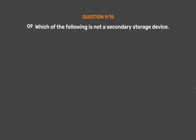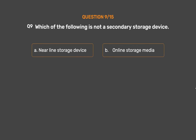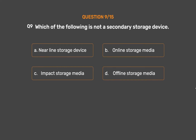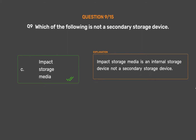Question No. 9. Which of the following is not a secondary storage device? Option A: Nearline storage device. Option B: Online storage media. Option C: Impact storage media. Option D: Offline storage media. The correct answer is Option C — Impact storage media. Impact storage media is an internal storage device, not a secondary storage device.